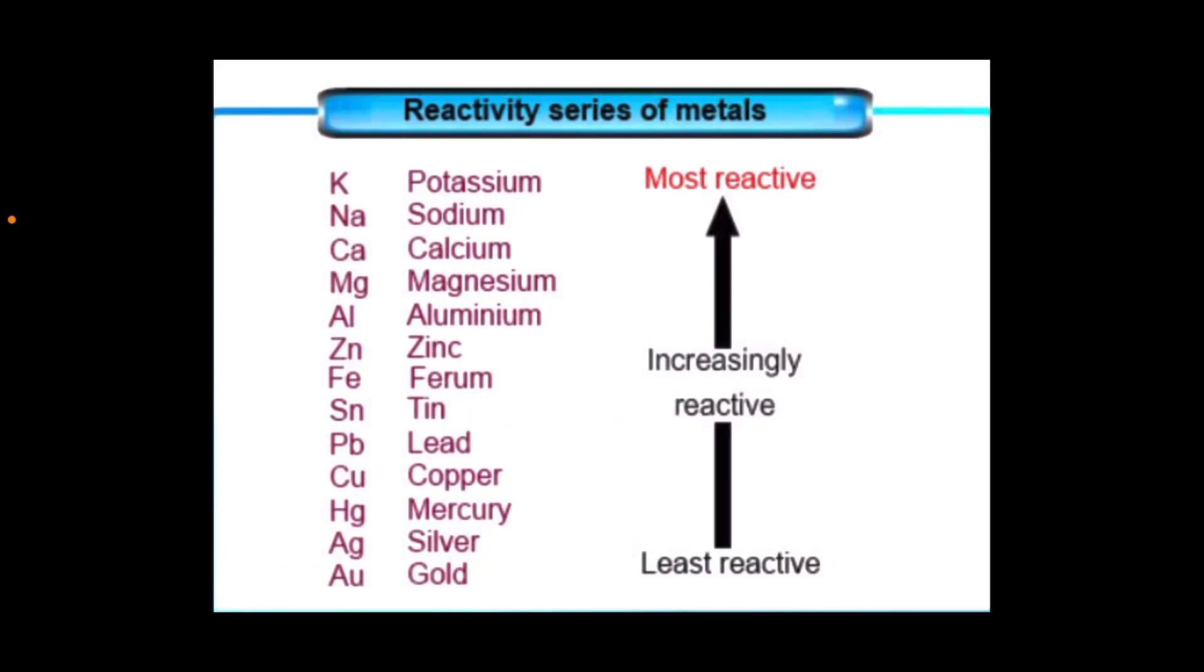This chart shows the reactivity series for metals, and you can see that magnesium is much higher on the chart for reactivity than copper, and that's why magnesium is able to take the oxygen from copper oxide as it reduces the copper oxide to elemental copper.